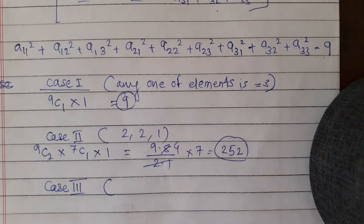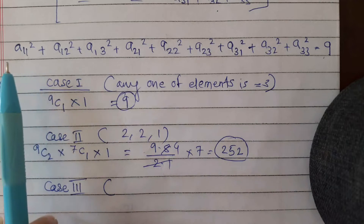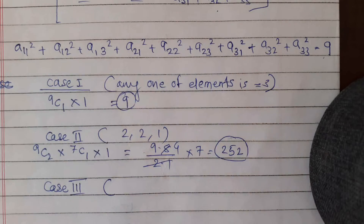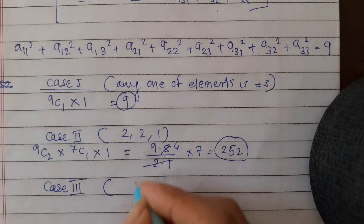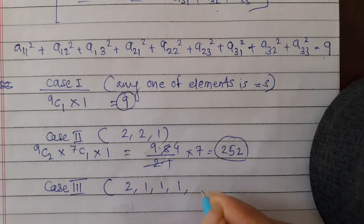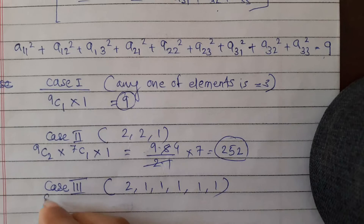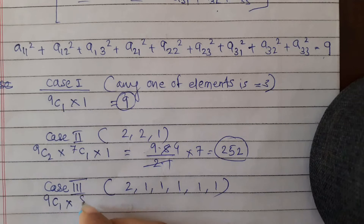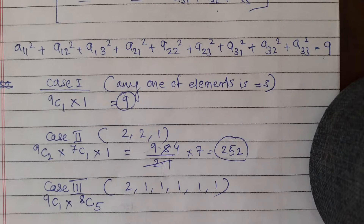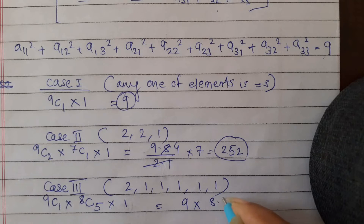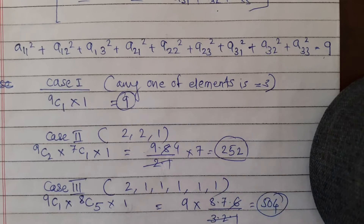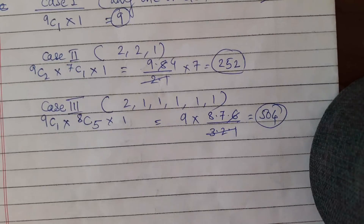Case 3: when any one element is 2 and any five other elements are each 1, with the rest being 0. That gives 2² + 1×5 = 4 + 5 = 9. The number of ways is 9C1 × 8C5 = 9 × 56 = 504.